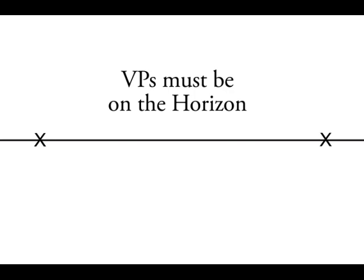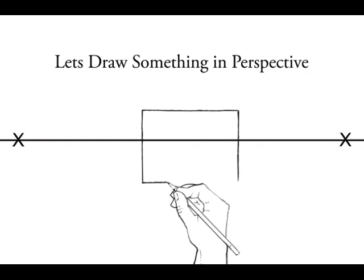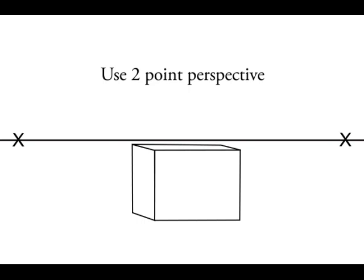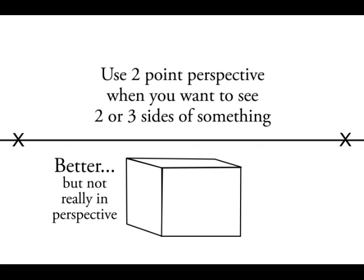Okay, let's draw something in perspective. Straight-on squares don't need two-point perspective. Use perspective when you want to show two or three sides of something.